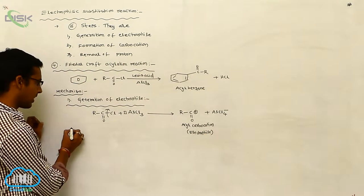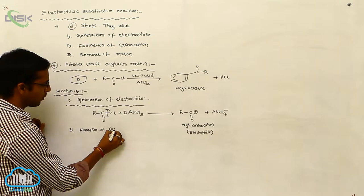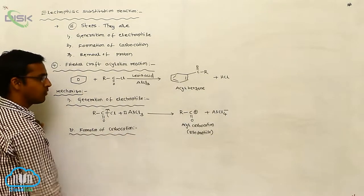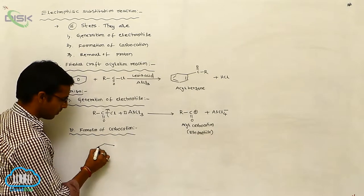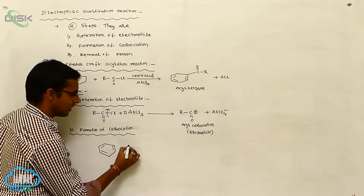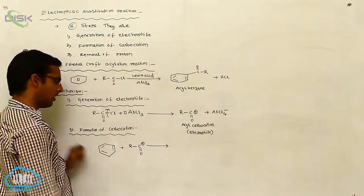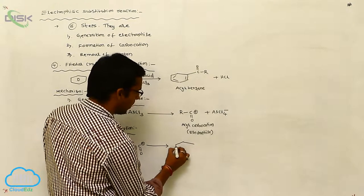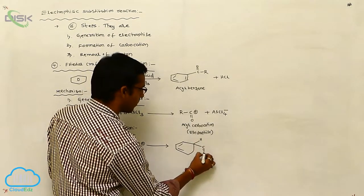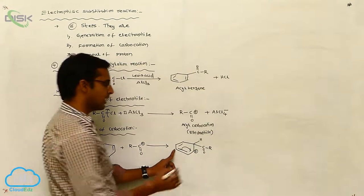The second step is formation of the carbocation intermediate. The benzene ring reacts with the acyl cation (R-C=O⁺). The electrophile attacks benzene, producing an intermediate that carries a positive charge — here the pi bond shifts and this carbon gets a positive charge.